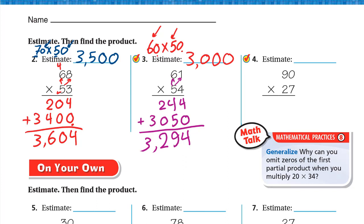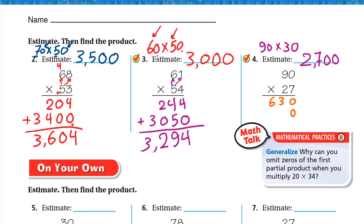Problem 4: 90 times 27. 90 already has 0 in the ones place; 27 rounds to 30 (strong digit 7), so estimate is 90 times 30 — write two zeros, 9 times 3 is 27, estimate is 2,700. Multiply: 7 times 0 is 0, 7 times 9 is 63. Second step: write 0 (since 2 is actually 20), then 2 times 0 is 0, 2 times 9 is 18. Add: 0 plus 0 is 0; 0 plus 3 is 3; 6 plus 8 is 14 — write 4, carry 1; 1 plus 1 is 2. Answer: 2,430.